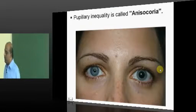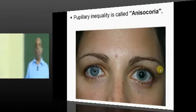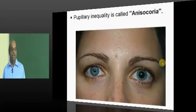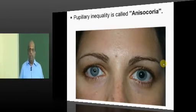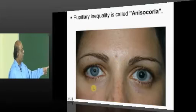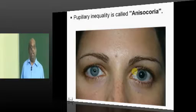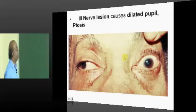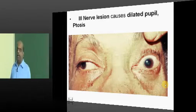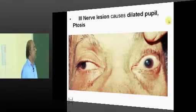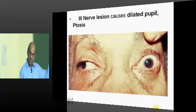One very common question in NEET-PG is the differential diagnosis of anisocoria — when one pupil is small and the other is big. How do you approach anisocoria? If it is a third cranial nerve palsy causing one pupil to dilate, it is generally associated with ptosis.